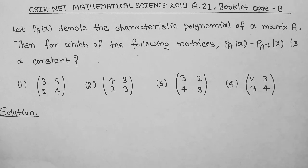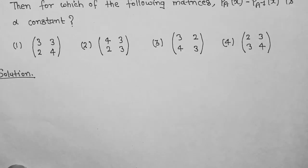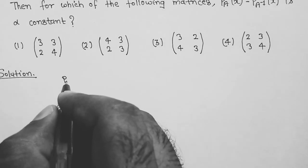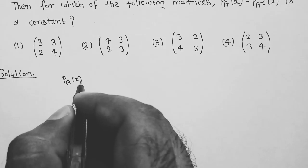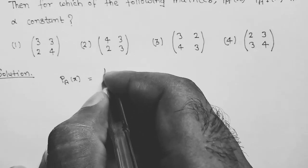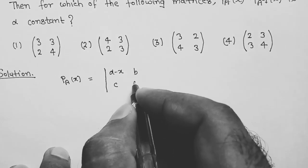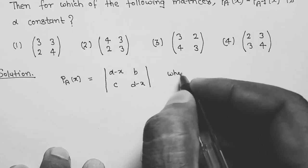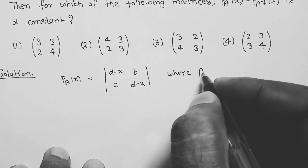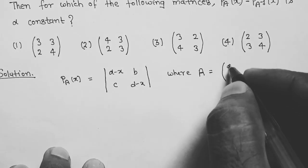CSIR NET Mathematical Science 2019, question number 21, booklet code B. Let P_A(x) denote the characteristic polynomial of a matrix. For which of the following matrices is P_A(x) minus P_{A⁻¹}(x) a constant? The characteristic polynomial of matrix A equals determinant of (A minus xI), where A equals [[a, b], [c, d]].